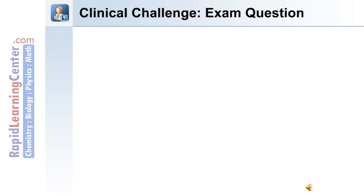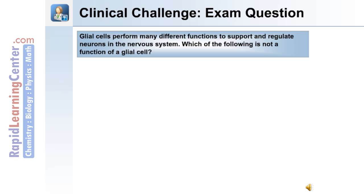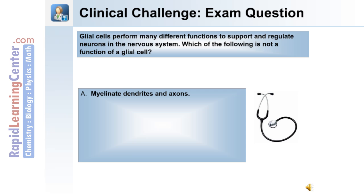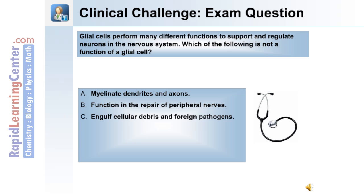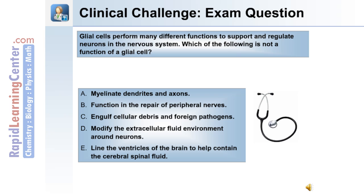Clinical Challenge Exam Question: Glial cells perform many different functions to support and regulate neurons in the nervous system. Which of the following is NOT a function of a glial cell? A. To myelinate dendrites and axons. B. Function in the repair of peripheral nerves. C. Engulf cellular debris and foreign pathogens. D. Modify the extracellular fluid environment around neurons. Or E. Line the ventricles of the brain to help contain the cerebrospinal fluid.